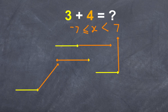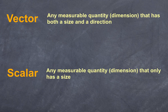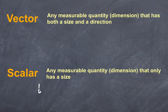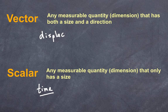So what I'm introducing here is the concept of vectors. Vectors are any measurable quantity or dimension that has both a size and direction. Any value that does not have a size and a direction is referred to as a scalar quantity — a measurable quantity that only has a size. So what are some dimensions labelled either a vector or a scalar? Well, let's start with scalars. Time, for example, clearly has no direction, so it is a scalar value. Displacement clearly has a directional component to it, so it is a vector quantity.